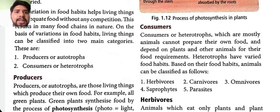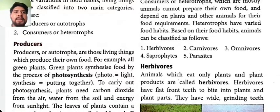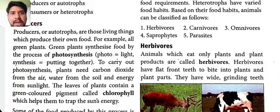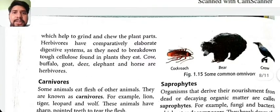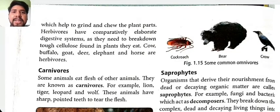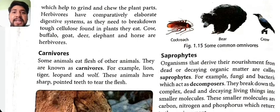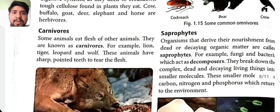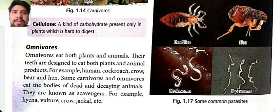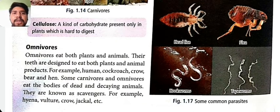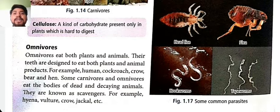Herbivores are animals that eat only plants and plant products. They have flat front teeth to bite into plants. Carnivores eat the flesh of other animals — for example, lion, tiger, leopard, and wolf. These animals have sharp, pointed teeth to tear flesh. Omnivores eat both plants and animals; their teeth are designed to eat both. Examples of omnivores are humans, cockroaches, crows, and bears.